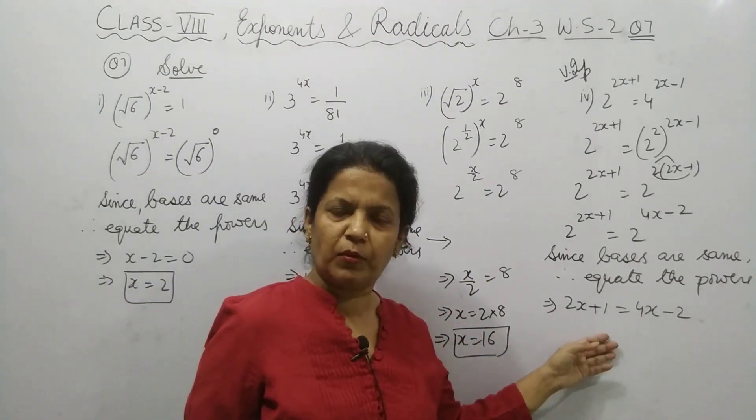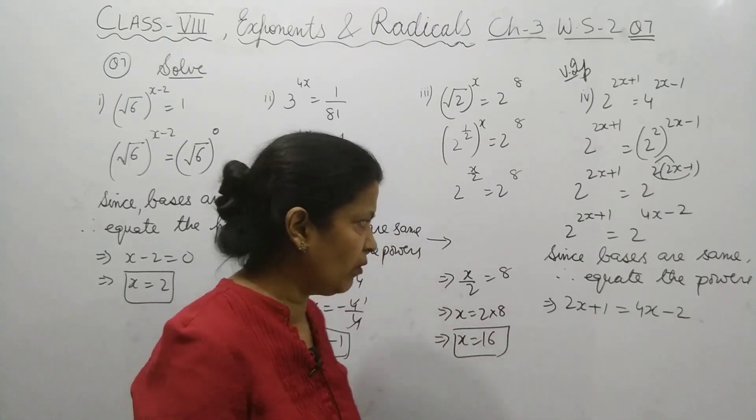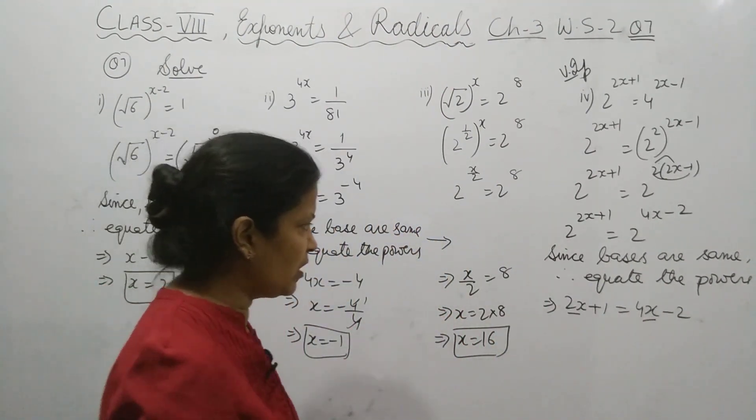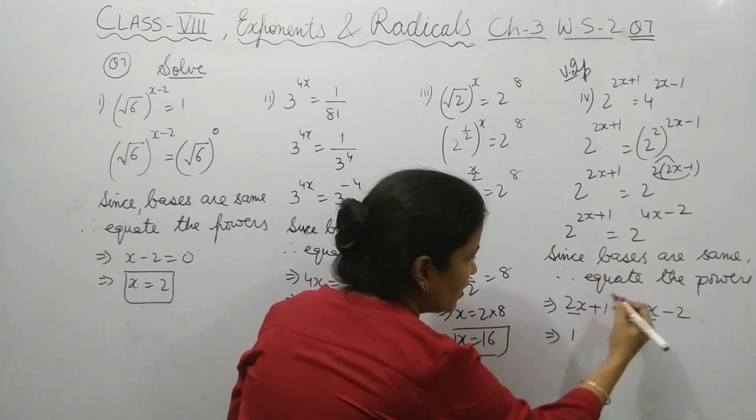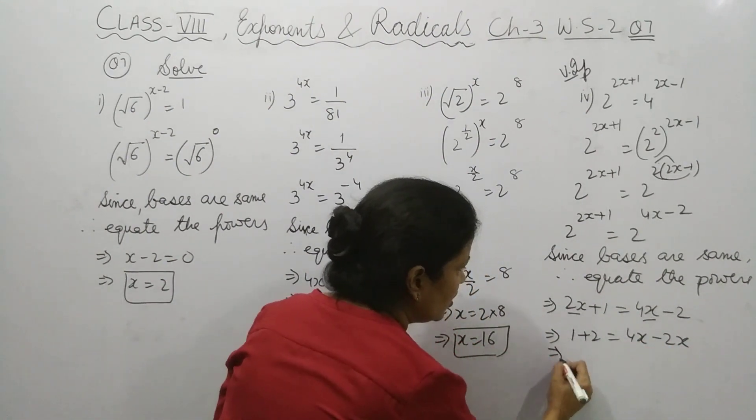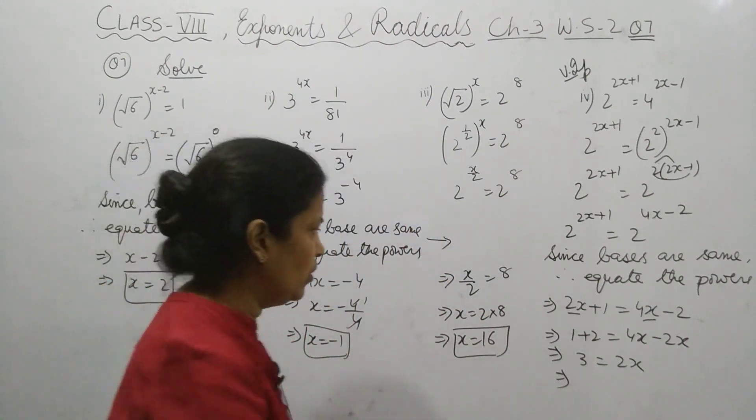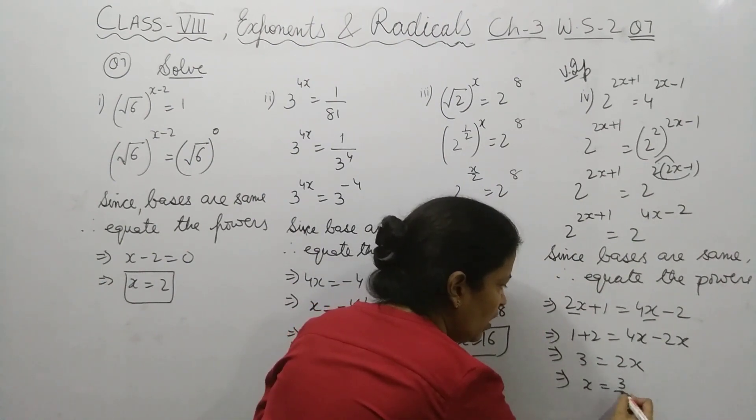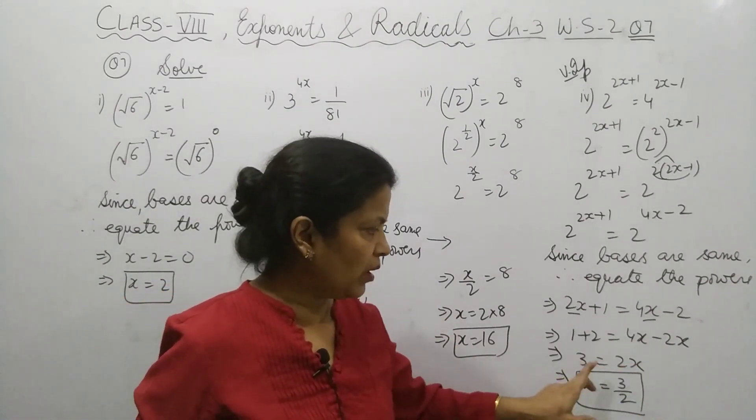This type of concept you did in your previous class. This is the linear equation. Take the same variable on the same side. Shift this 2 over here, plus 2. 4x minus 2x, so 3 equals 2x. So x equals 3 upon 2.